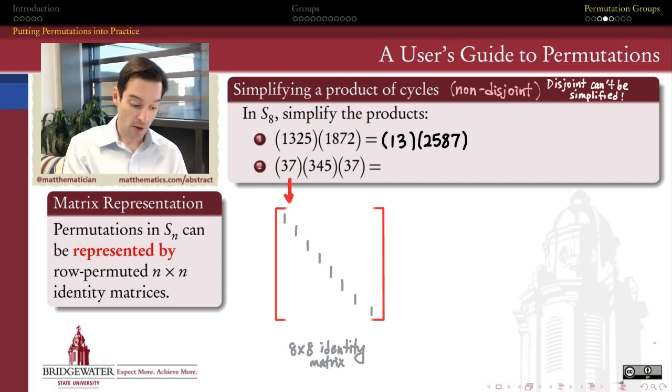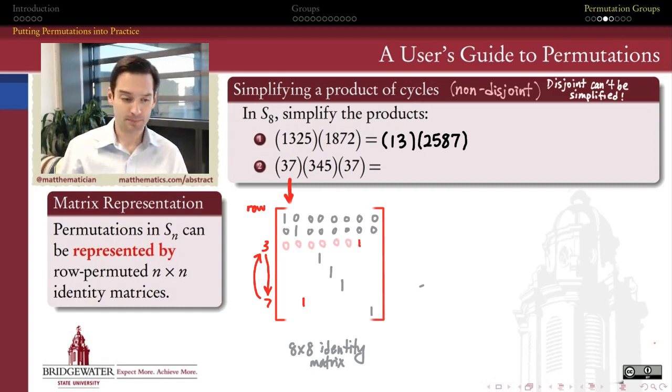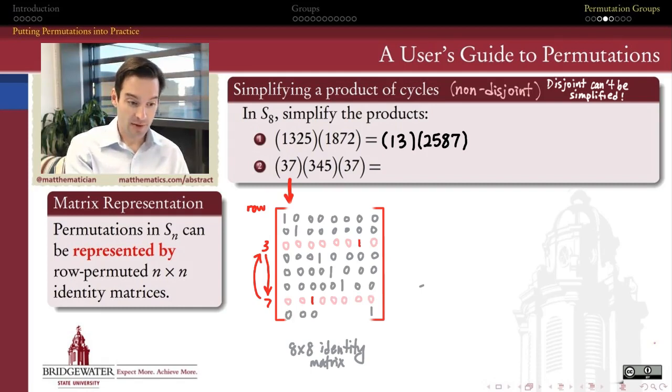I'll take the third row and make it the new seventh row, and I'll take the seventh row and make it the new third row. So just trade places between the third row and the seventh row. This big giant 8 by 8 matrix looks almost like the identity matrix, and the only difference is that its third and seventh rows are permuted.